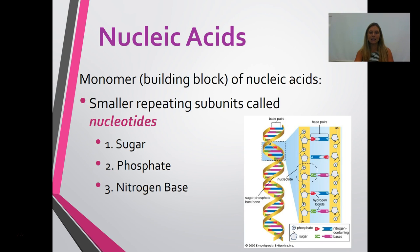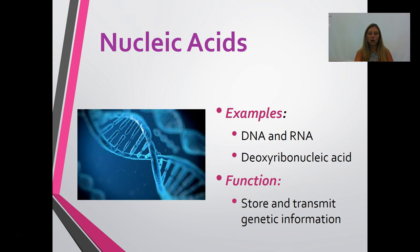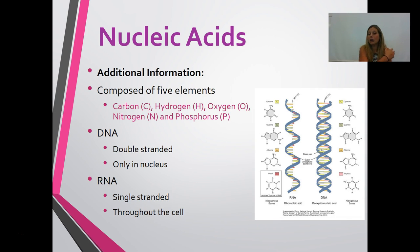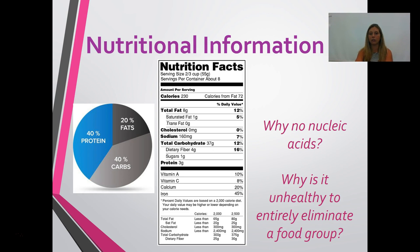The last macromolecule is nucleic acids, made up of smaller repeating units called nucleotides. A nucleotide consists of three parts: a sugar, a phosphate, and a nitrogen base. Repeating those three parts gives you nucleic acids — DNA and RNA. DNA, deoxyribonucleic acid, stores and transmits genetic information. Nucleic acids are composed of five elements — CHONP: carbon, hydrogen, oxygen, nitrogen, and phosphorus. DNA is double-stranded and found only in the nucleus; RNA is single-stranded and found throughout the cell.